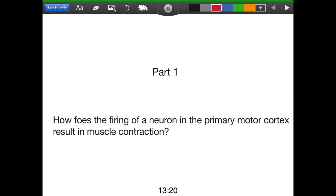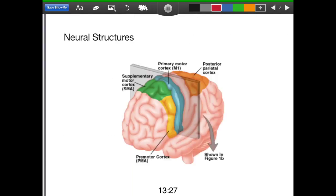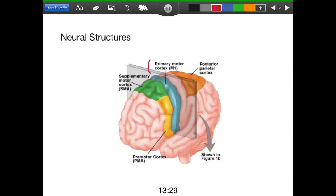To begin with, voluntary contraction of a muscle to produce a movement begins in the part of the brain known as the primary motor cortex, and we can see this in blue right here.